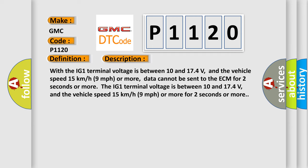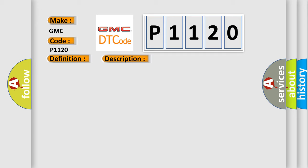With the IG-1 terminal voltage between 10 and 174 volts, and the vehicle speed 15 kilometers per hour (9 miles per hour) or more, data cannot be sent to the ECM for 2 seconds or more. The IG-1 terminal voltage is between 10 and 174 volts, and the vehicle speed 15 kilometers per hour (9 miles per hour) or more for 2 seconds or more. This diagnostic error occurs most often in these cases: CAN Communication System.